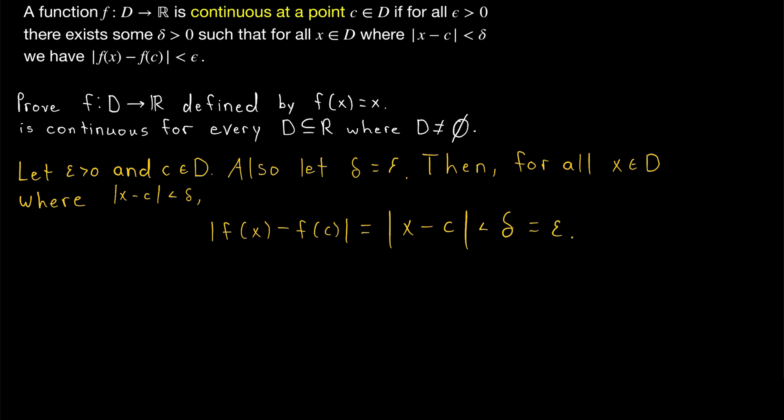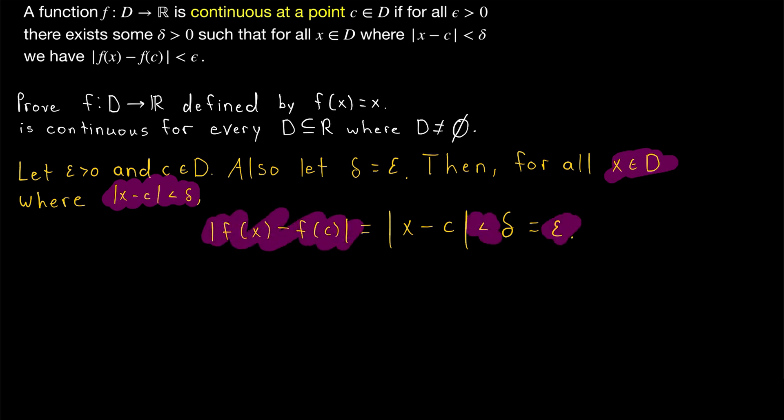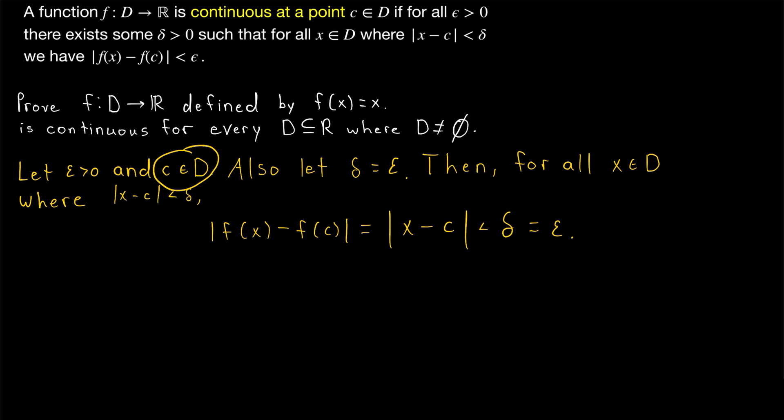We'll say let delta equal epsilon. Then for any element x from our domain that is within delta of c, we have that f of x is within epsilon of f of c. Thus the function f is continuous at c. And since c was an arbitrary point from our domain D, which was just an arbitrary non-empty subset of the real numbers, we've proven that the identity function is continuous on every non-empty subset from the real numbers.